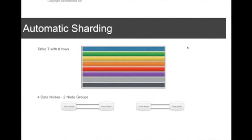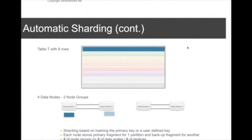In this example, we have a single table with eight rows, four data nodes, and two node groups. Node groups are a logical construct — MySQL Cluster creates node groups depending on how many data nodes and replicas you have configured. The first row is inserted into data node one, and a copy of that row is inserted into data node two. The hashing is done using the primary key, so it's very important to define a primary key on the table; otherwise MySQL Cluster will create a hidden primary key, which can have some impact on performance when you query that data.